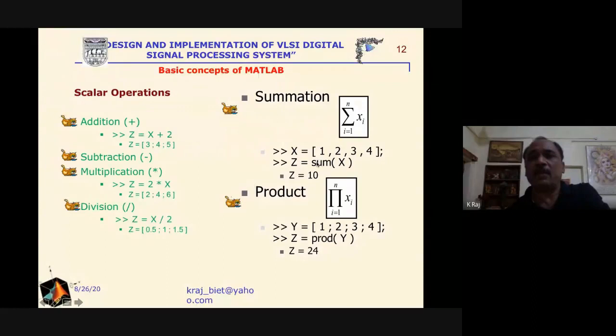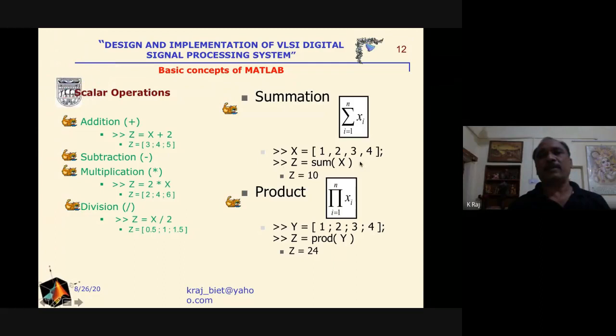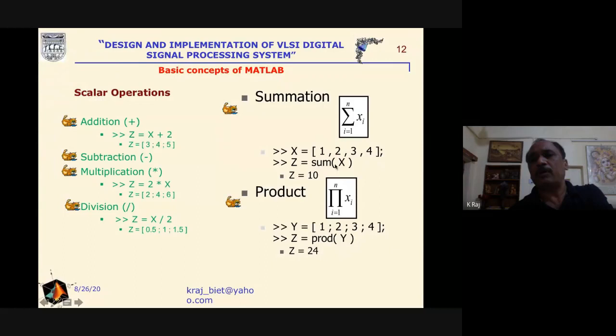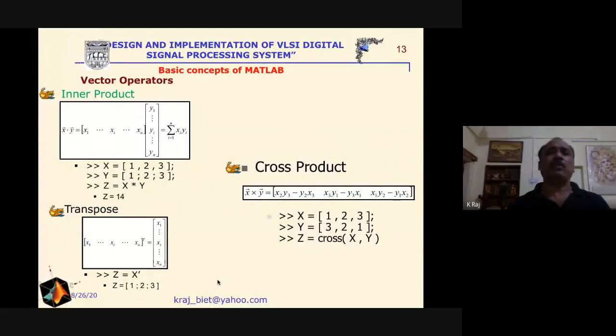To sum all elements of a row vector x = [1 2 3 4], you can define the elements separated by spaces or commas and just write sum(x) to get the result. Similarly, if y is a column vector and you want the product of all elements, just write prod(y) and you will get the product. These are very simple commands.